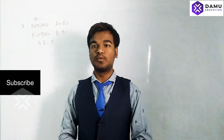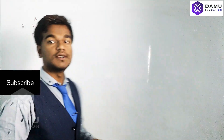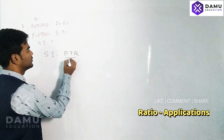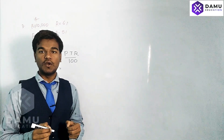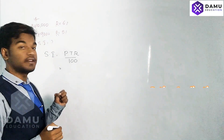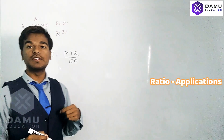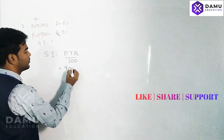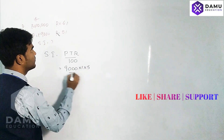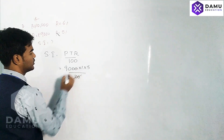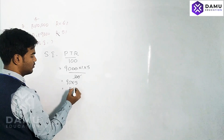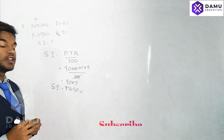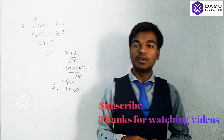Simple interest will be PTR divided by hundred. They deposited nine thousand rupees, so the rate of interest will be five percent, because nine thousand does not equal or exceed ten thousand. So P is nine thousand, T is one year, R is five percent. Nine thousand into five divided by hundred gives us simple interest of four hundred and fifty rupees. Thanks for watching, please subscribe.